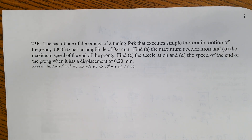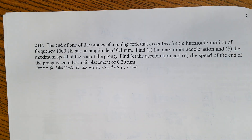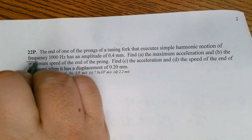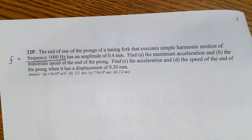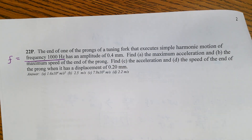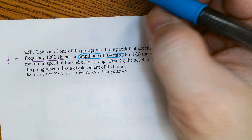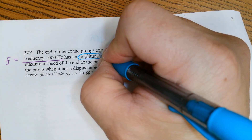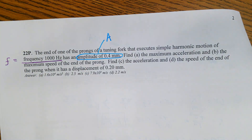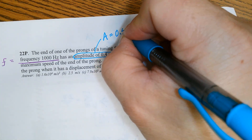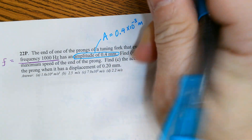The end of one of the prongs of a tuning fork executes simple harmonic motion at a frequency of 1000 hertz. The amplitude is 0.4 millimeters — make sure to keep everything in the MKS system, so amplitude A = 0.4 × 10⁻³ meters.